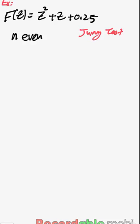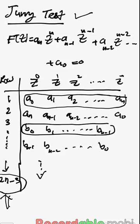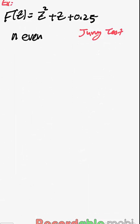Now let's solve an example using the Jury test. The characteristic equation is f(z) = z² + z + 0.25, and we need to test its stability. As you can see, it is a second-order equation, so n equals 2, which is even. The number of rows for the Jury test will be 2n minus 3, so 2 times 2 minus 3 equals 1. We have only one row for this Jury test.